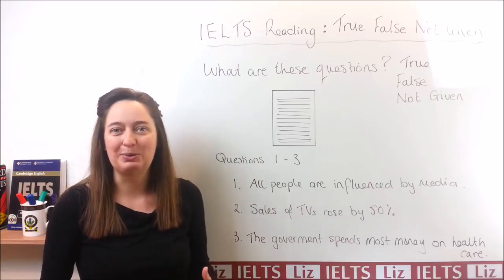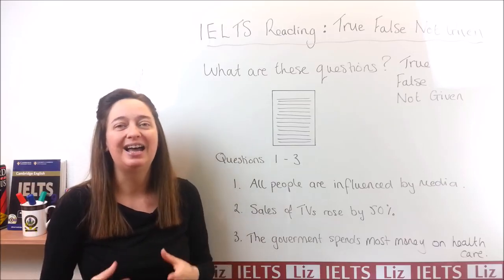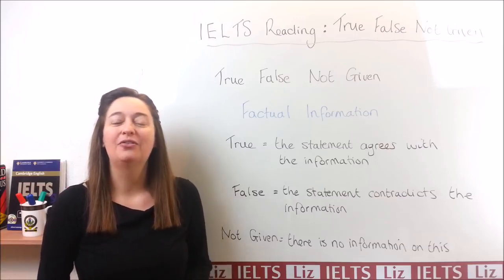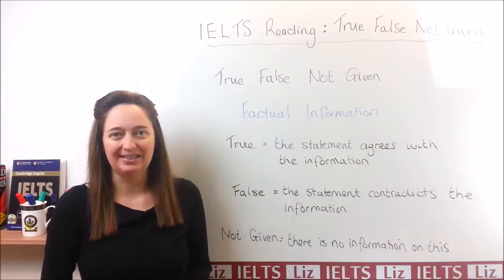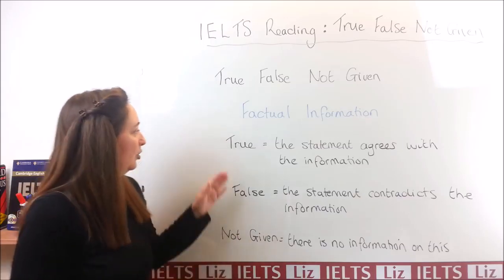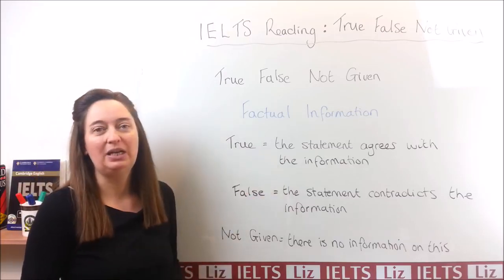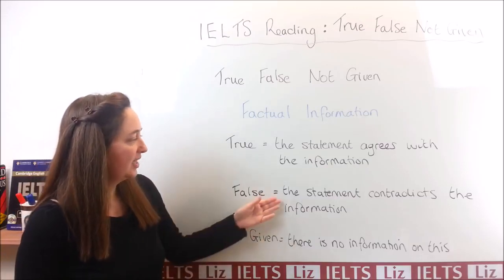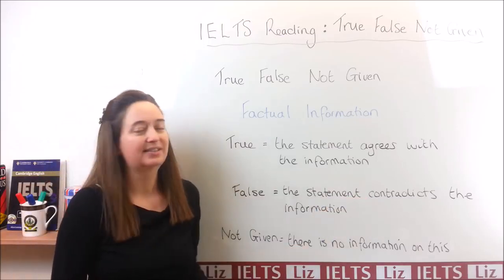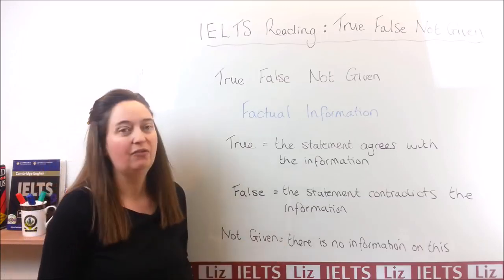Now that's the basic requirement of this question. Let's have a look at the difference between True, False, Not Given and Yes, No, Not Given. The True, False, Not Given questions are all about factual information in the passage — it's not about opinions, it's about fact. True means that the statement in your question agrees with the information in the passage. False means the statement contradicts the information — contradicts means it's the opposite meaning. And not given means there is no information on this.